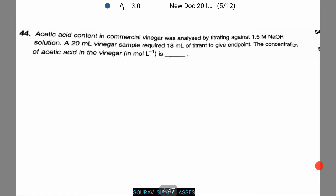In the next question we are given acetic acid contained in commercial vinegar. It was analyzed by titrating against 1.5 molar NaOH solution. Then a 20 ml vinegar sample was taken which required 18 ml of titrant to give the endpoint. Now we need to calculate the concentration of acetic acid in the vinegar. Notice we have to write it in moles per liter.